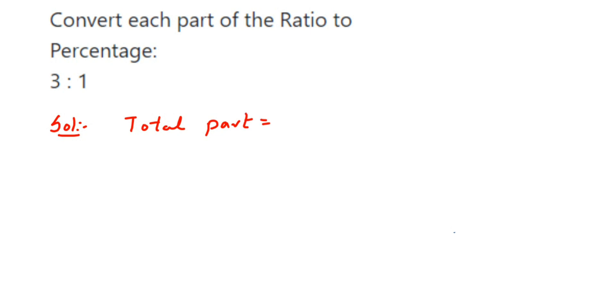total parts will be 3 plus 1, which is equal to 4. So the first portion out of 4 is 3 parts, and the second one out of 4 is 1 part. Okay, so the first